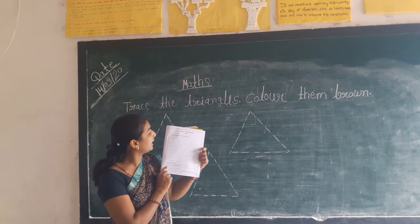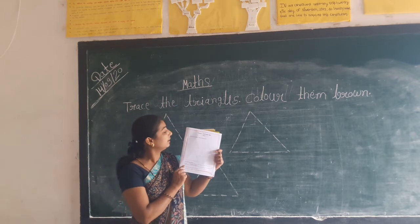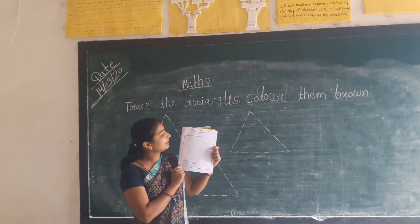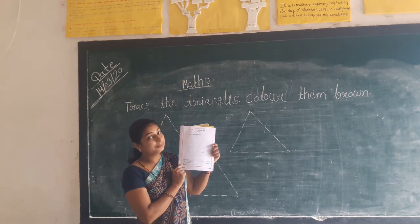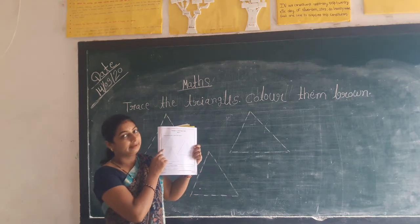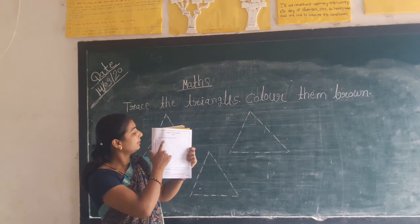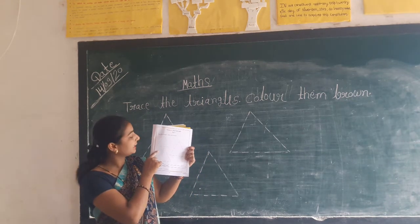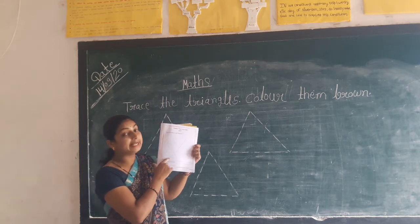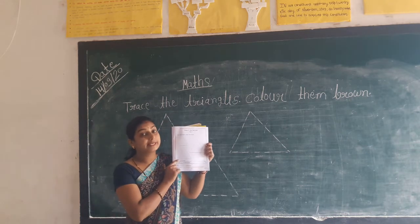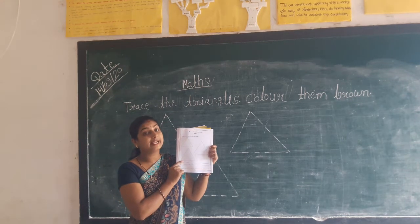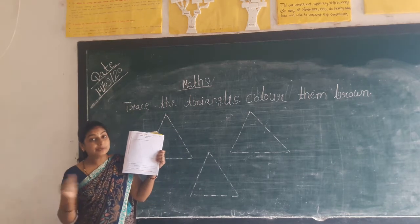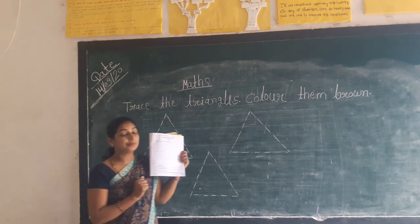Here I am tracing the triangle's colour — brown. Now you have to trace the triangle. You have to fill the triangle. What is the colour? Brown colour.